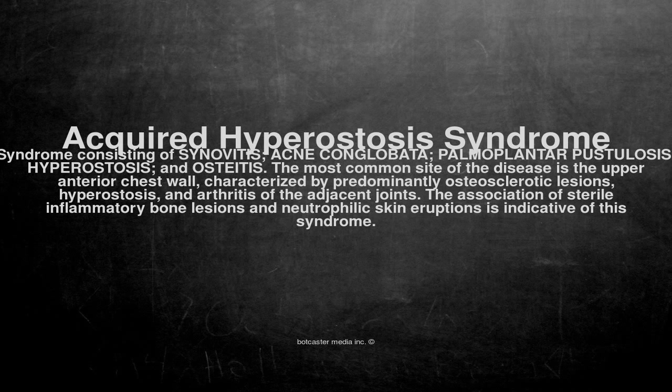The most common site of the disease is the upper anterior chest wall, characterized by predominantly osteosclerotic lesions, hyperostosis, and arthritis of the adjacent joints. The association of sterile inflammatory bone lesions and neutrophilic skin eruptions is indicative of this syndrome.